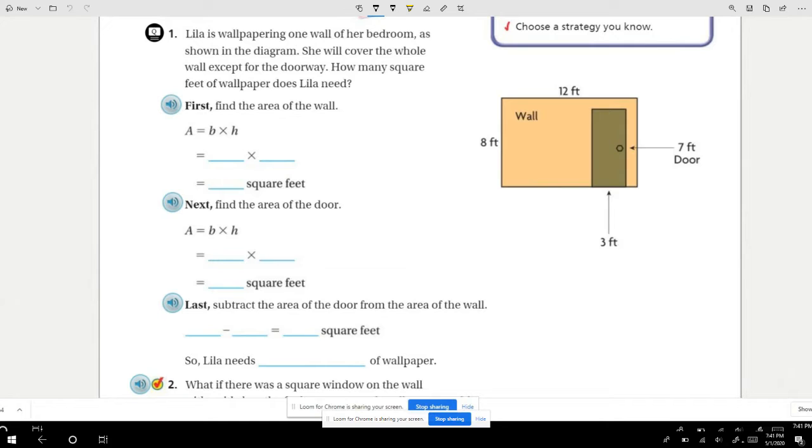If you take a look over here at the diagram, you'll see that this wall has a height of 8 feet and a base of 12 feet. That's going to be very important. And then we're going to find our rectangular door with a base of 3 feet and a height of 7 feet. So now we go back to the problem.